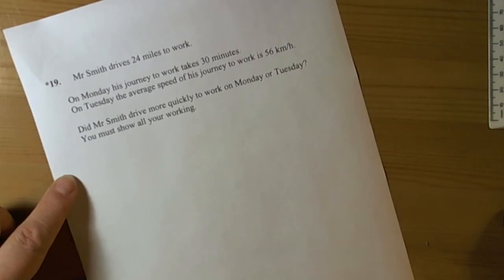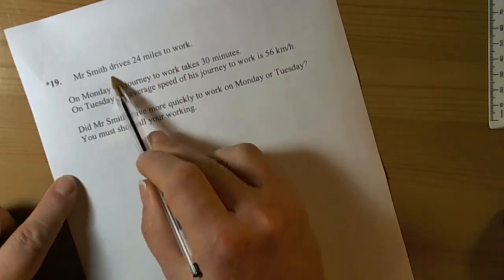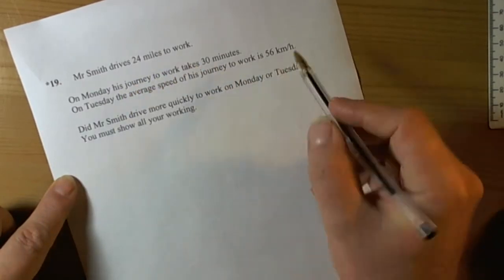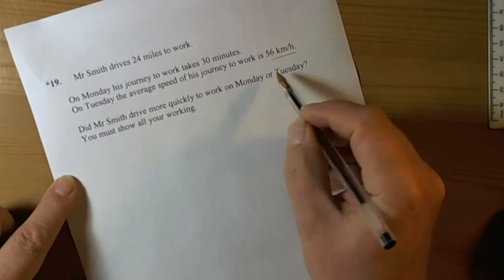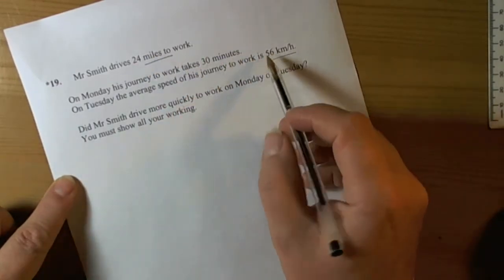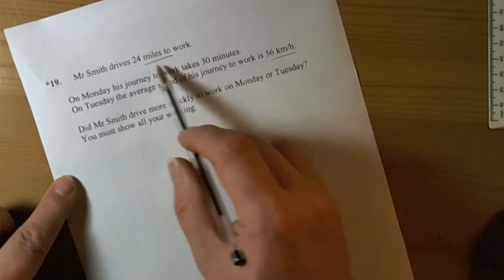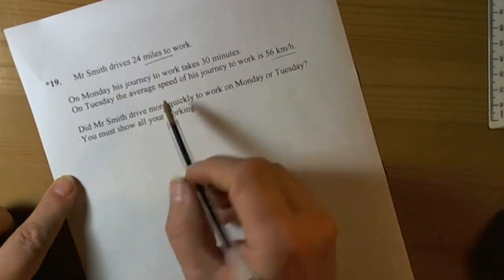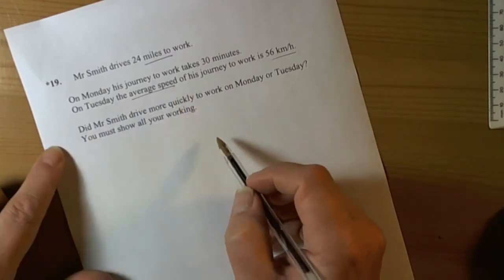Okay, so this question is talking about somebody driving miles to work, takes 30 minutes, so 36 km per hour. So we've got the classic kilometers, miles, so we've got to do some kind of conversion. And when we look at it, it looks like it's related to speed because it's got average speed there.